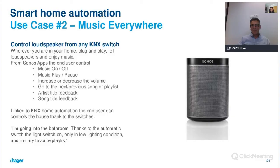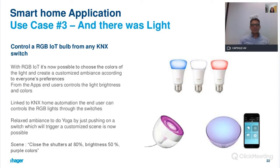Use case number two: loudspeaker IoTs. With standard products and sound apps, you can manage music on/off, play, pause, increase or decrease volume, go to the next or previous song or playlist, and display the artist and title. Linked to the KNX home automation system, the end user can manage music and display artist and title on existing switches — for example, in the morning an automatic switch turns on the light in low-lighting conditions and starts a favorite playlist.